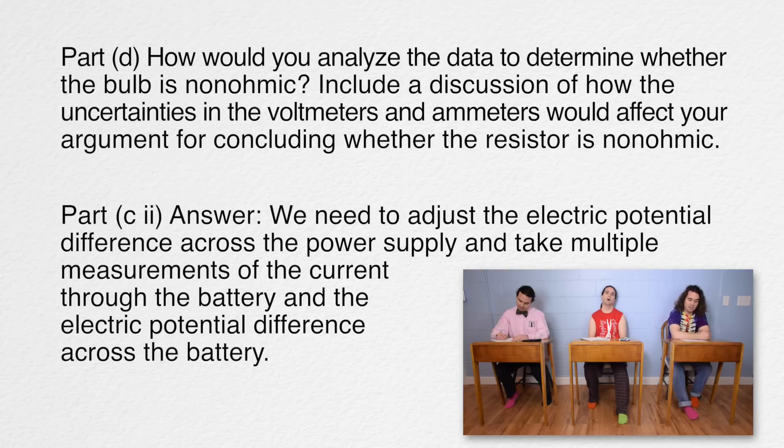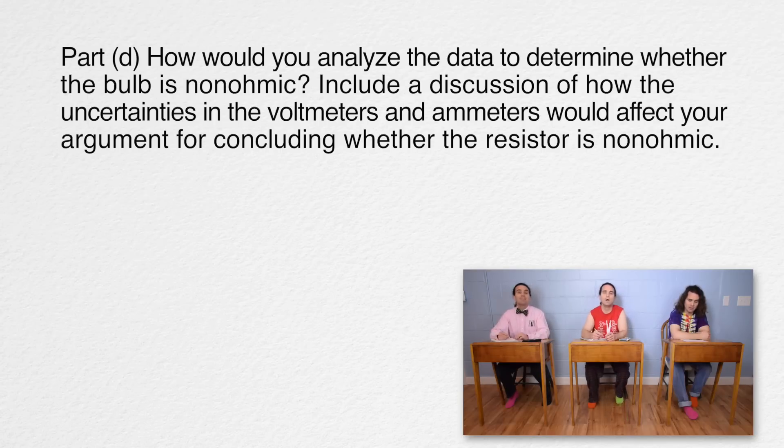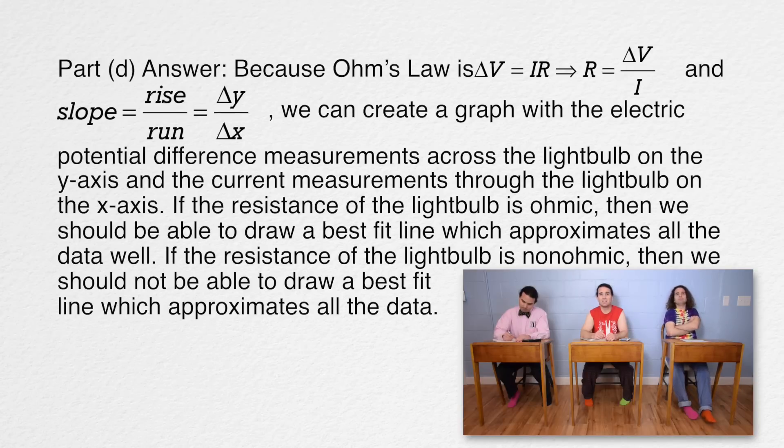And Bo, please read part D. Part D: How would you analyze the data to determine whether the bulb is non-ohmic? Include a discussion of how the uncertainties in the voltmeters and ammeters would affect your argument for concluding whether the resistor is non-ohmic. Bobby? We can write, because Ohm's law is electric potential difference equals current times resistance, therefore resistance equals electric potential difference divided by current, and slope equals rise over run or change in y over change in x, we can create a graph with the electric potential difference measurements across the light bulb on the y-axis and the current measurements through the light bulb on the x-axis. If the resistance of the light bulb is ohmic, then we should be able to draw a best fit line which approximates all the data well. If the resistance of the light bulb is non-ohmic, then we should not be able to draw a best fit line which approximates all the data.